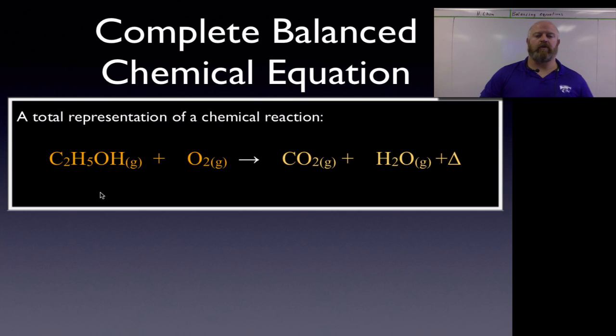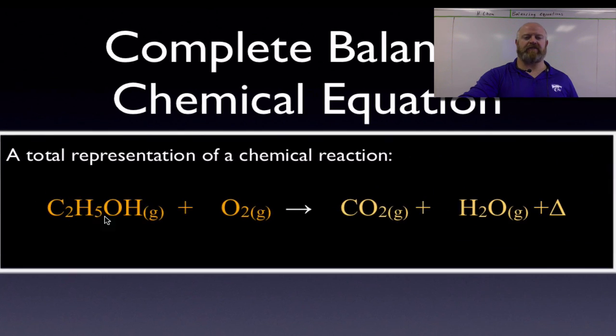So to do that, we need to talk about the complete balanced chemical equation and what goes in there. If we have the reaction C2H5OH, which we know is ethanol in its gas state, plus oxygen in its gas state, and we react those two together, what we're going to get from that is we're going to get carbon dioxide gas, we're going to make water in its gas form, and we're going to release heat energy. So this is going to be an exothermic reaction.